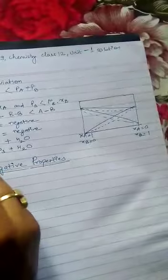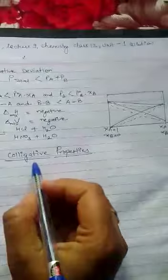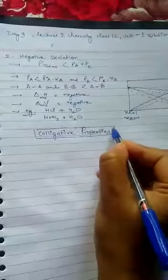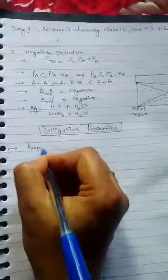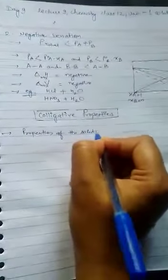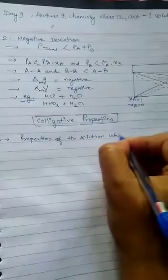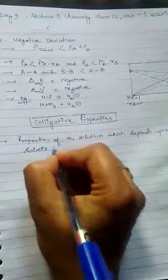We have completed the first part of the chapter, and now in the second part we are going to start colligative properties. Colligative properties are very, very important from the examination point of view. Colligative properties are the properties of solutions which depend upon the number of solute particles.